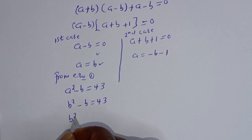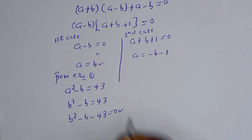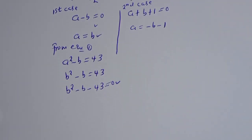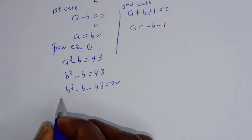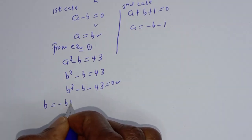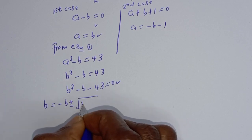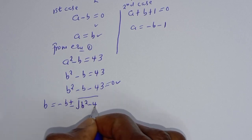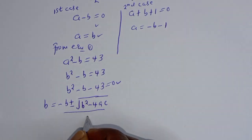Now, B squared minus B minus 43 is equal to 0. This is a quadratic equation — let's solve it using the quadratic formula: x equals minus b plus or minus square root of (b squared minus 4ac) over 2a.